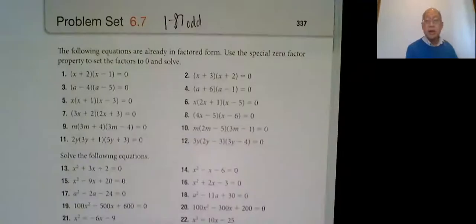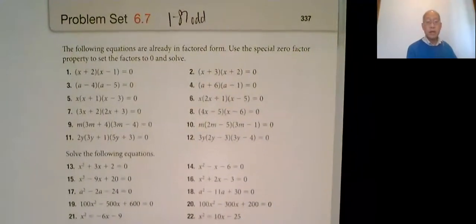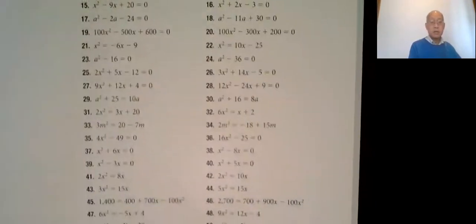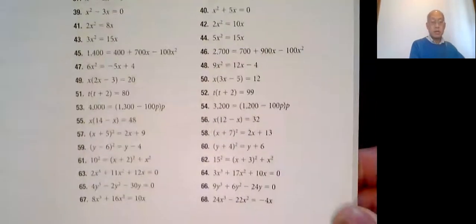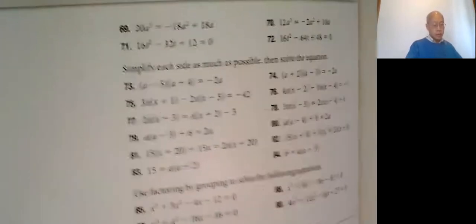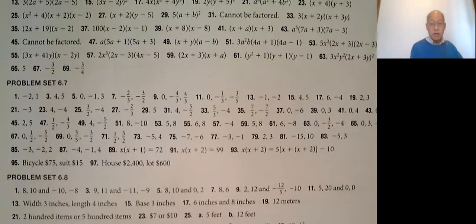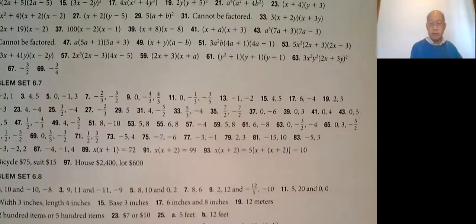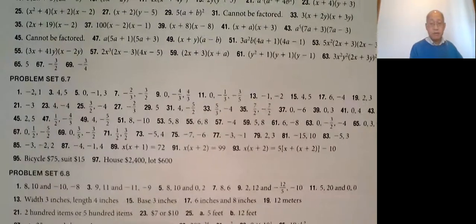Section 6.7, page 337, 1 to 87 odd. There's some problems up to about 19, some more down to about 47, and some more on the next page up to 87. Then the answers are in the back of the book. You can't quite see the far right side, so let me move that over a little bit.